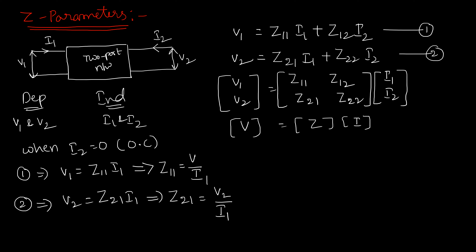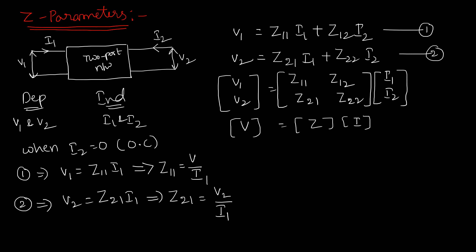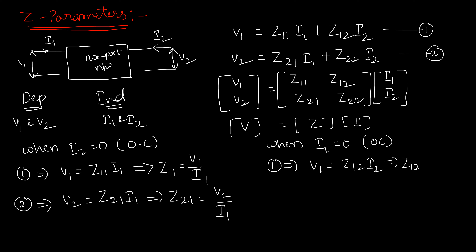Now go with the second condition: when I1 = 0, port 1 is open-circuited. From the first equation, V1 = Z12·I2, so Z12 = V1/I2. From the second equation, V2 = Z22·I2, so Z22 = V2/I2. So we have two conditions: when I2 = 0 we get Z11 and Z21; when I1 = 0 we get Z12 and Z22.